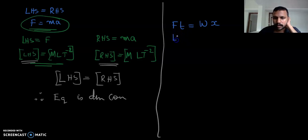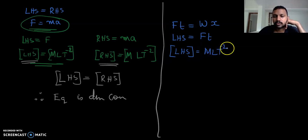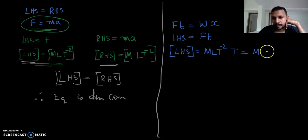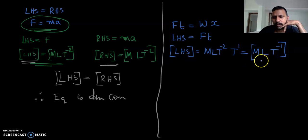First, we write the LHS which is F into T. The dimensional formula of force is MLT raised to minus 2, and the dimensional formula of time is T. So MLT raised to minus 2 into T gives T raised to minus 2 plus 1, that is T raised to minus 1. Therefore, MLT raised to minus 1 is the dimensional formula of LHS.